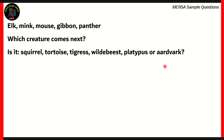In order to solve this question, we need to check out the animals given in this particular list. If you look at the words themselves, there is no connection between the first letters or the last letters. But a connection you can make out is between the last letter of the first word and the first letter of the next word. Elk ends in a K, mink begins with an M. The letter M is the second letter after K, so this relation holds.